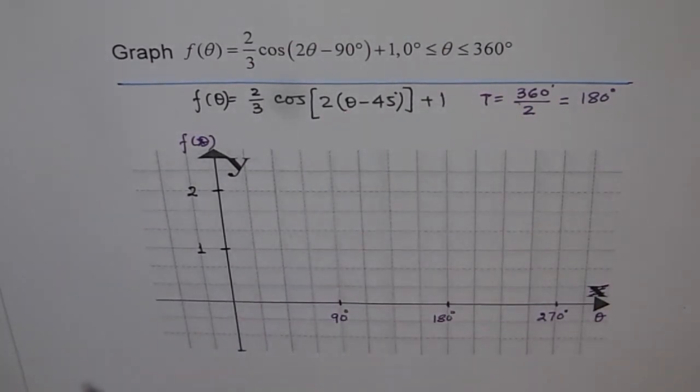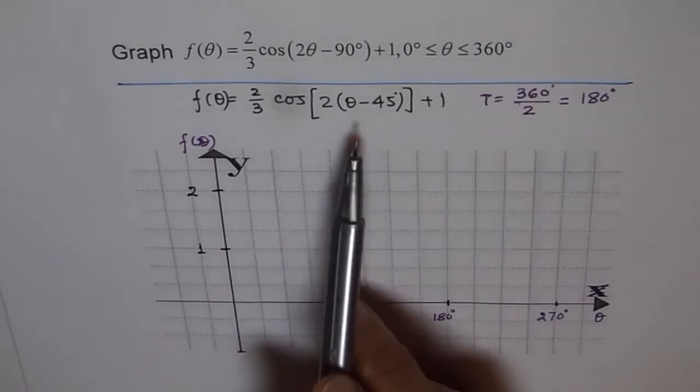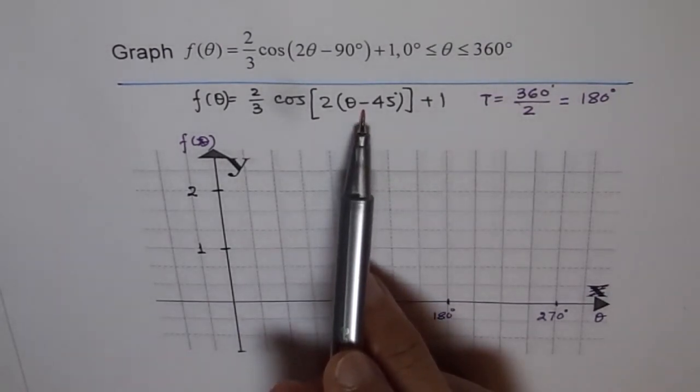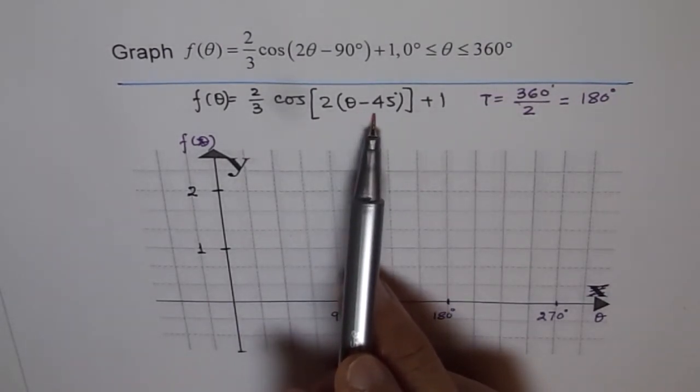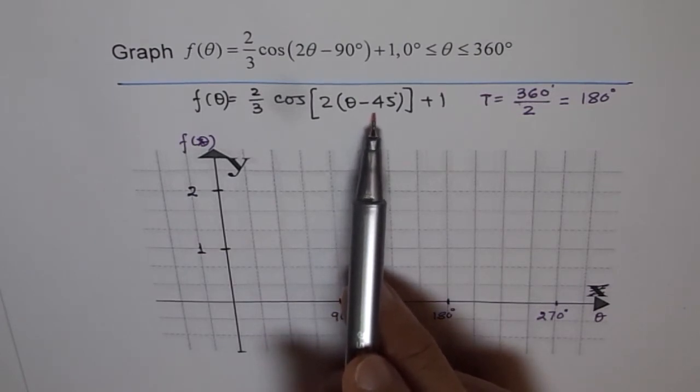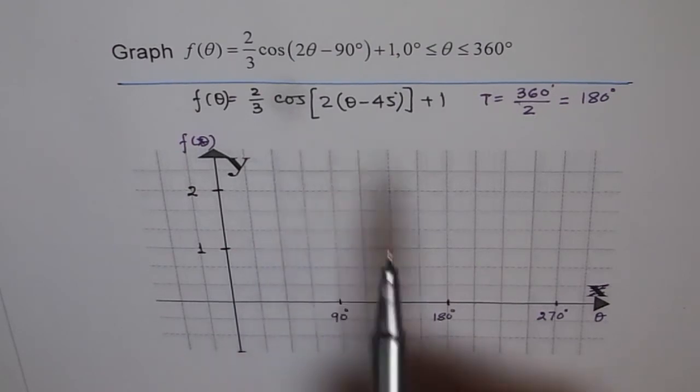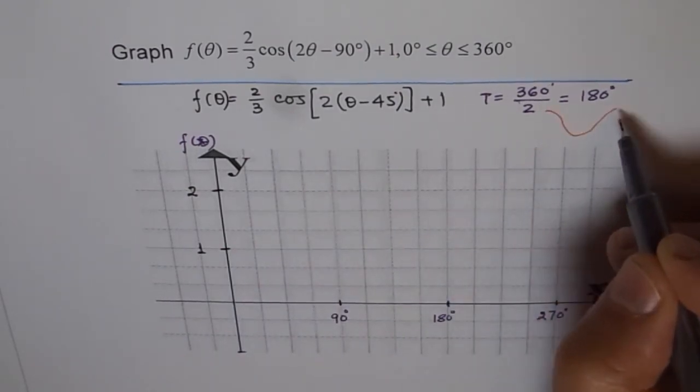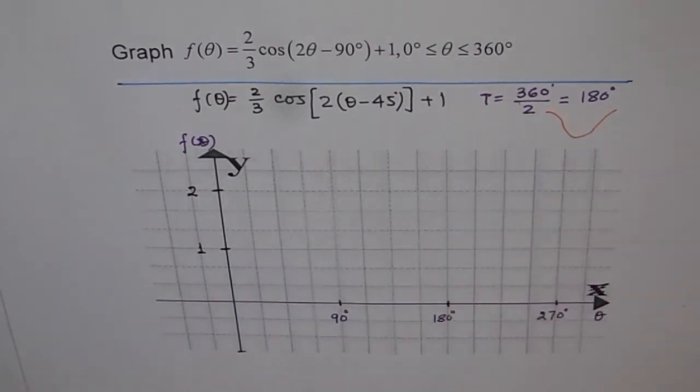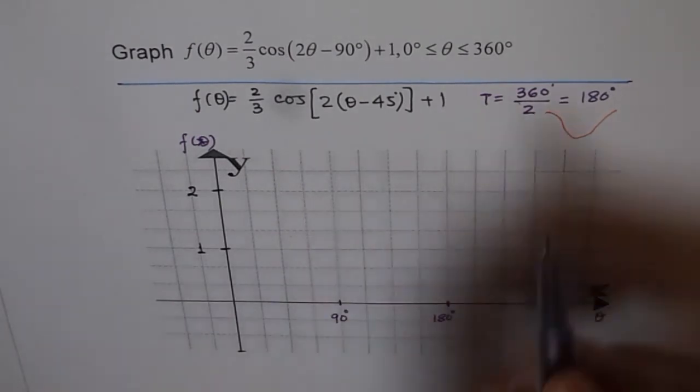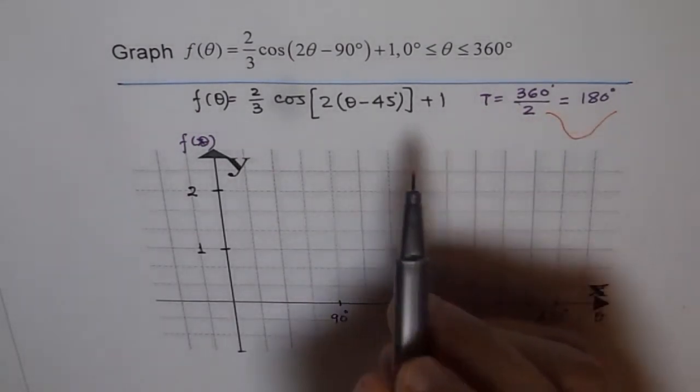My recommendation is first sketch without horizontal shift and then do horizontal translation. That is my recommendation and I think that works best. Because we have been seeing cos curve in a particular way, it's important to just sketch it first and then we can always move it left or right.